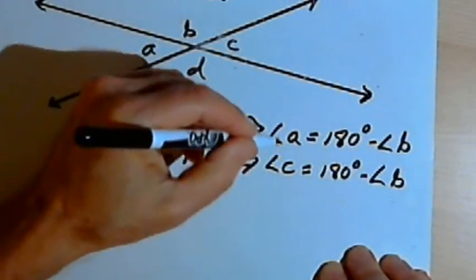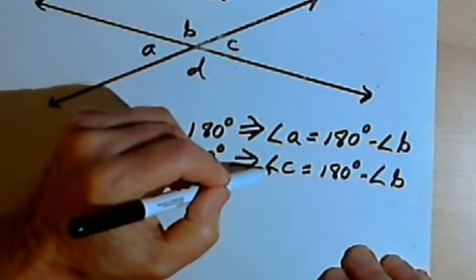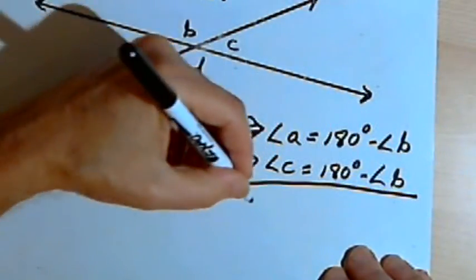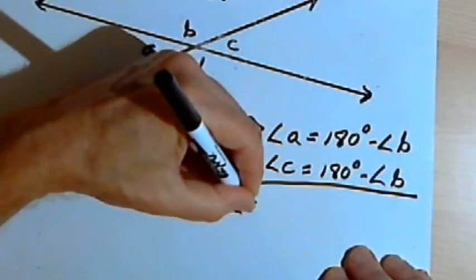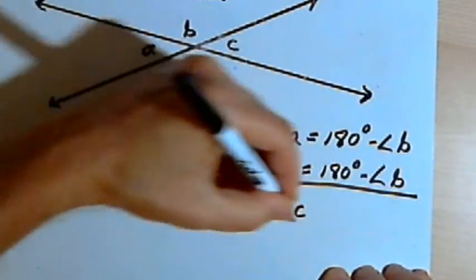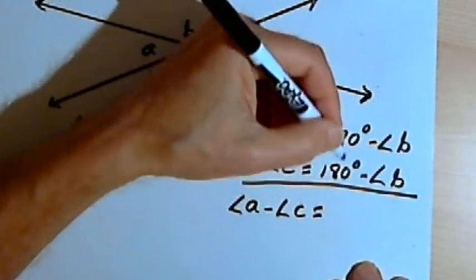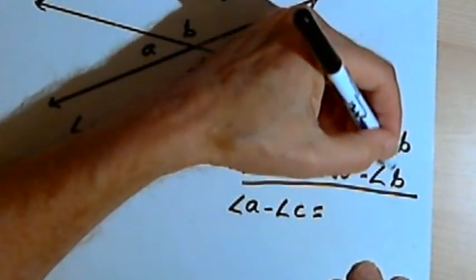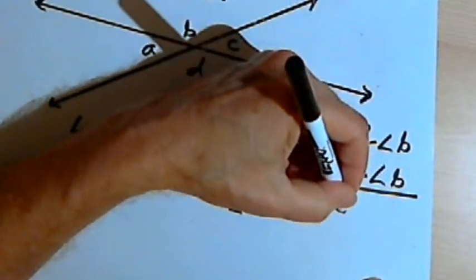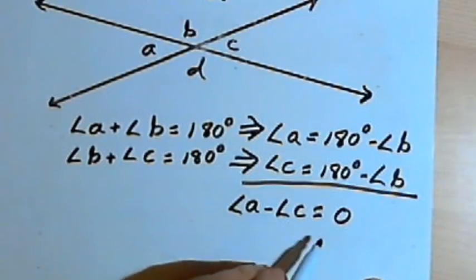And now let's subtract both of those equations. We'll subtract the angle C equation from the angle A equation. And I'm going to end up with angle A minus angle C equals, well let's see, 180 degrees minus 180 degrees is zero. And I've also got angle B and angle B. So when I subtract the right sides of the equation, I'm going to end up with zero. So I've got angle A minus angle C equals zero.